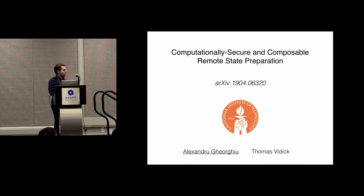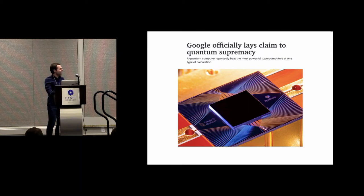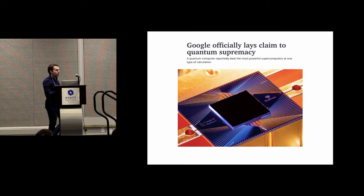I'm going to motivate this talk in just one slide, and that's this slide. So very recently, Google announced that they achieved quantum supremacy, which basically just means that they claim to have solved a computation on a quantum chip in less time than it takes to solve it on the best supercomputer we have today.